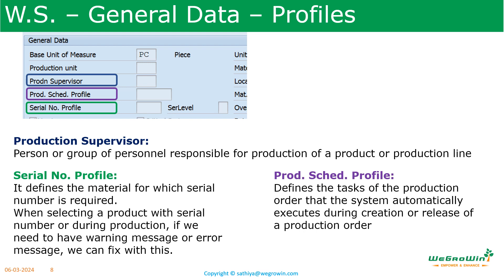Then we have various profiles and the production scheduler details. The production supervisor is a person or group of personnel who are responsible for the production of a product. For example, you have a production line and there is a person responsible — that person's name will be entered here. Whenever you take any reports related to production orders or plant orders, you can select this as a selection parameter and view those plant orders and production orders.